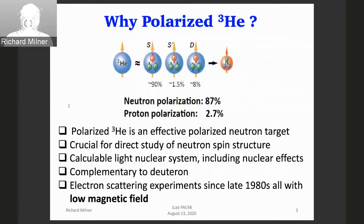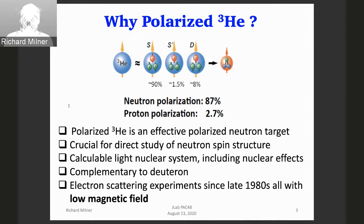Polarized helium-3 for close to 30 years has been an effective polarized neutron target for scattering experiments. It's been crucial for direct study of neutron spin structure. If you go to the particle data book, you will see nice data on the proton and the deuteron, but no figure on the neutron. One of the goals of the JLAB program and future EIC is to correct this. However, helium-3 is really a nucleus — a light nuclear system with an EMC effect — but it's calculable. It's a different nucleus from the deuteron, and together in the same detector they raise very interesting possibilities.